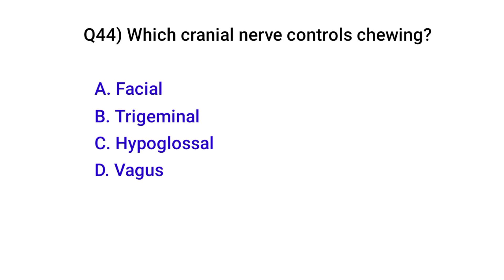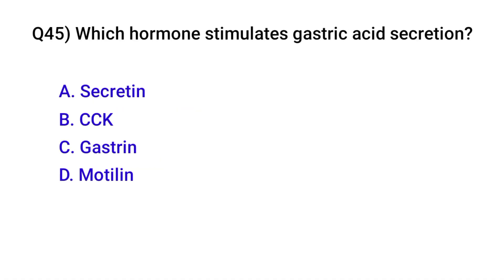Question number forty-four: Which cranial nerve controls chewing? Correct option is B: Trigeminal nerve. Question number forty-five: Which hormone stimulates gastric acid secretion? Correct option is C: Gastrin.